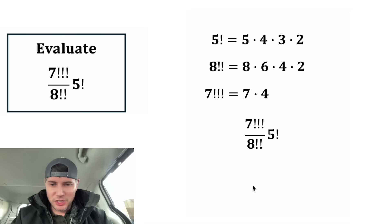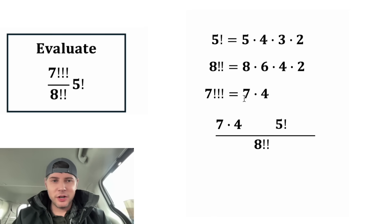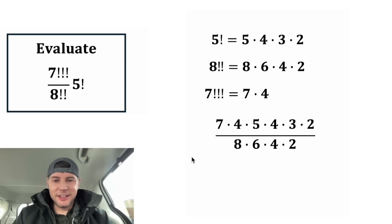Let's copy down the original expression, and let's rearrange it like this. In the place of the 7 triple factorial, let's plug in 7 times 4. And then for the 5 factorial, we'll plug in 5 times 4 times 3 times 2. And then for the 8 double factorial, we can plug in 8 times 6 times 4 times 2.